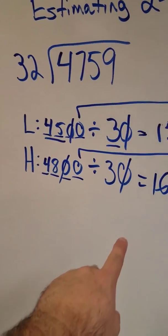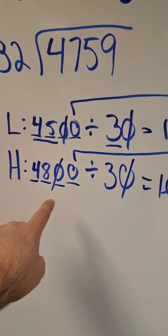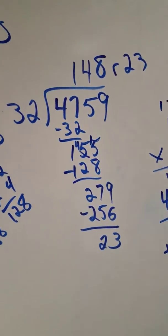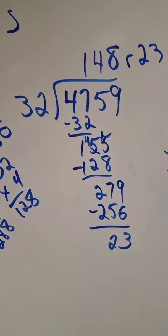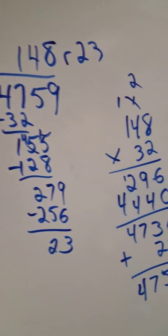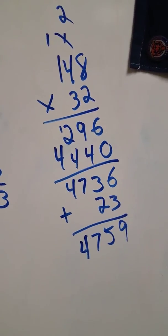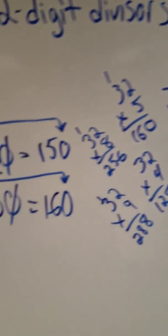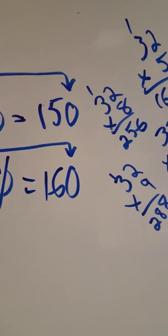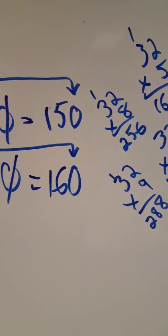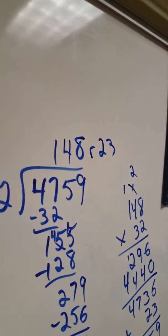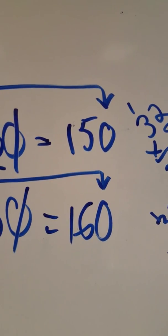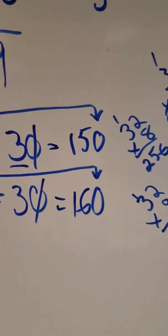So I got my estimate — my low estimate is 150, my high estimate is 160. Don't forget, I changed the divisor and the dividend, so my quotient is 150 to 160. I went ahead and did it the long way, which is our next lesson, and I got 148 remainder 23. I checked it and got 4,759, which is my dividend, so I know that answer is correct. You might say it should be between 150 and 160 — well, 148 remainder 23 is pretty darn close to my actual estimates. Remember, an estimate is just a guess. I hope that helps. Have a good night.